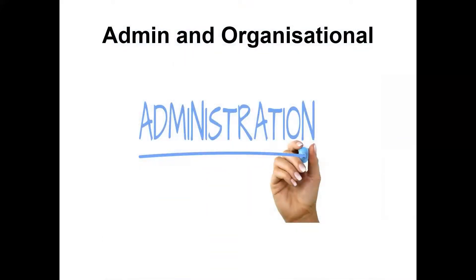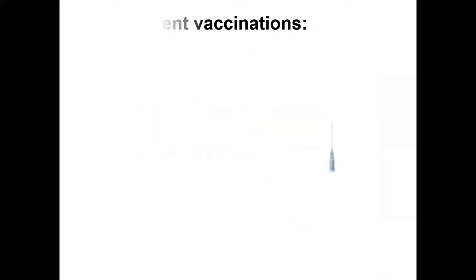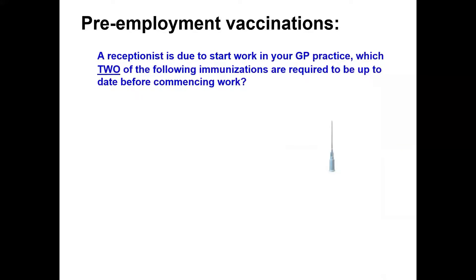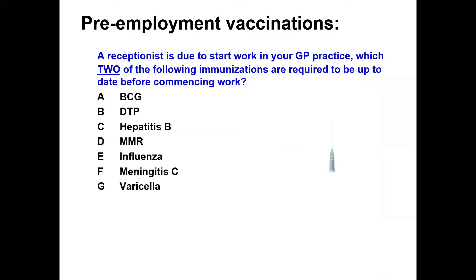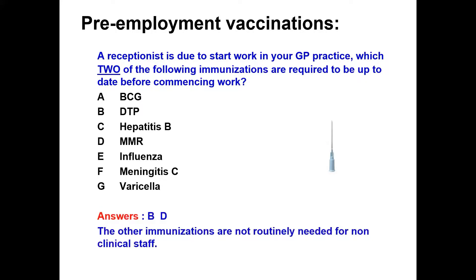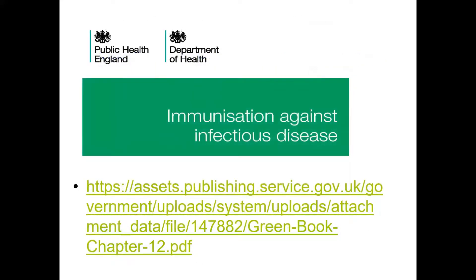For admin and organisational aspects, pre-employment immunizations have come up a lot. For example: a receptionist is due to start work in your GP practice — which two of the following immunizations are required to be up to date before commencing work? A) BCG, B) DTP, C) Hep B, D) MMR, E) influenza, F) chickenpox, G) varicella. The answers are B and D. The other immunizations are not routinely needed for non-clinical staff. This is referenced from the Green Book Chapter 12 — noting it has not yet been fully updated to account for whether COVID vaccination will be mandatory for non-healthcare workers. Always important to go back to the source to make sure you're aware of updates.